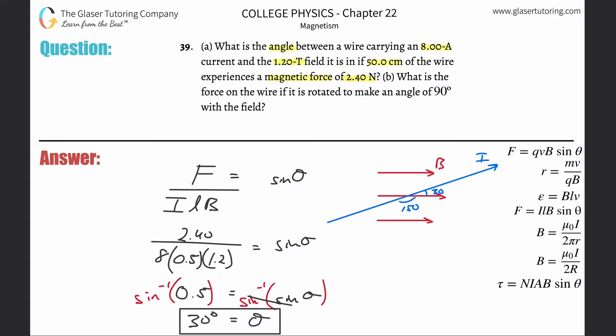Anyway, enough of that. Letter B, what is the force on the wire if it is now rotated to make an angle of 90 degrees with the field?